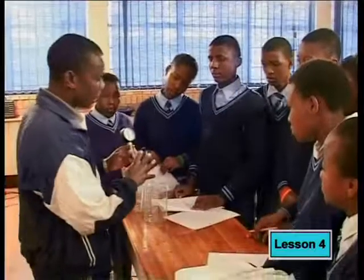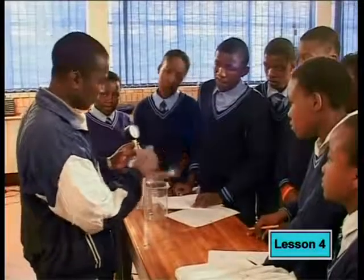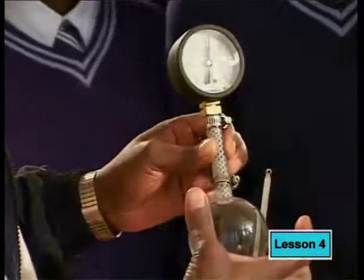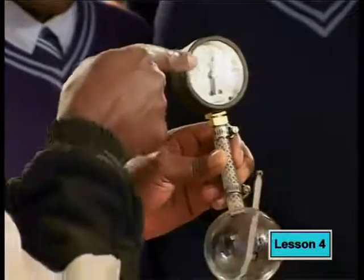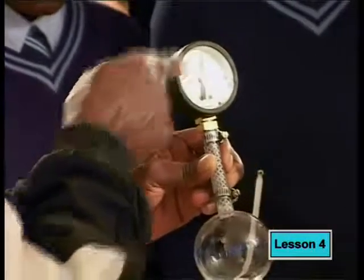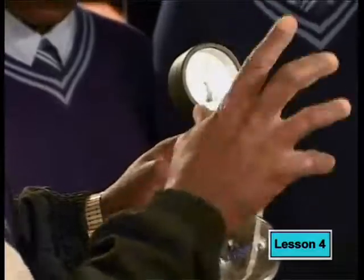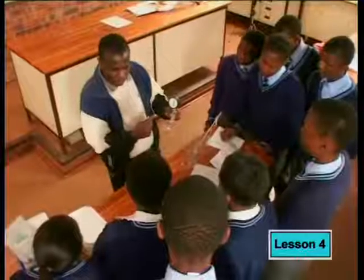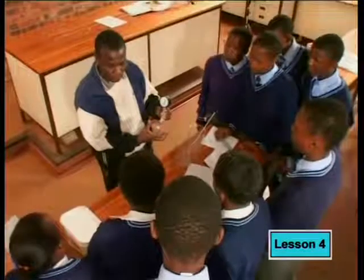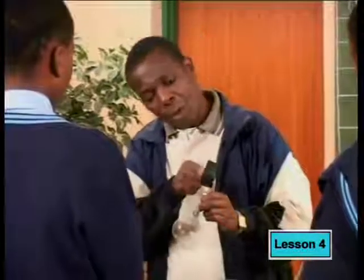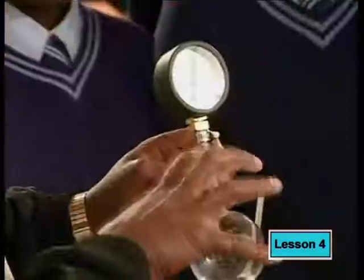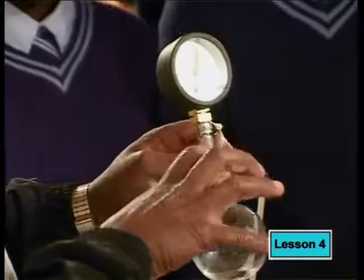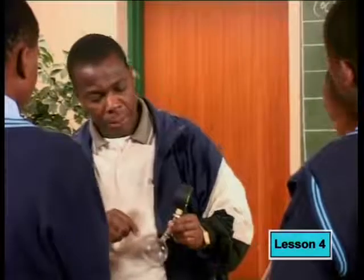This is called the Jolly Bulb. As you can see, it is fitted to the pressure gauge, and we have some very dry air inside here. We have to look at what happens to the pressure gauge as we increase and decrease the temperature, and remember the volume of the gas is kept constant.